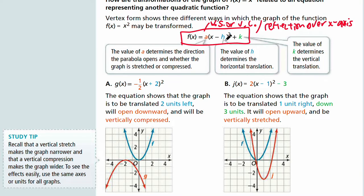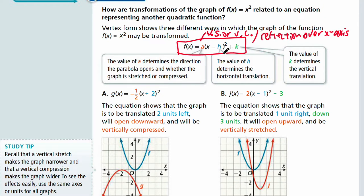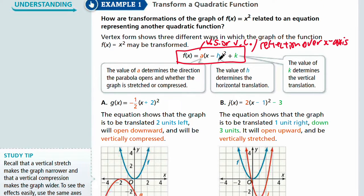'H' is the value that determines the horizontal translation, and note that it's written as x minus H. So if your H is negative, your function will look like it has a positive sign. This positive two in the equation is not saying H is positive — it's saying H is negative, because H has to be negative in order to produce addition. And K is just K.